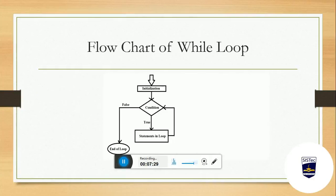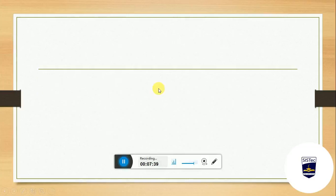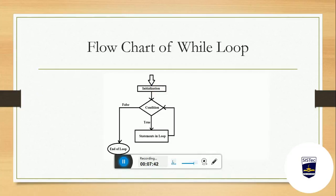While loop का flowchart: पहले initialization होती है, फिर condition check होती है। Condition true है तो loop के statements execute होते हैं, फिर वापिस condition check पर जाता है। जितनी बार loop cycle run करेगा, उतनी बार condition check होगी। एक बार भी किसी cycle में condition false हो गई, तो end of loop। यह हमारा while loop का flowchart होता है।